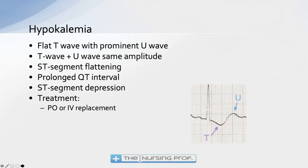We want to replace the potassium and get that level back up. Interestingly, oral administration is actually better than IV. When given IV, it goes right into the vein and down to the kidney, which perceives too much potassium and dumps it. We're not really retaining as much as we think. When given orally, it's absorbed in the natural way the body handles potassium, so the potassium level rises more effectively. If we can give it orally, we prefer that route.